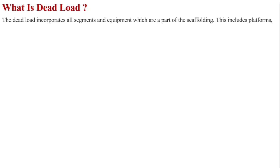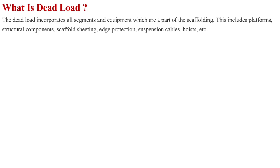The dead load incorporates all segments and equipment which are a part of scaffolding. These include platform, structure components, scaffolding, seating, edge protection, suspensions, scaffold, and hoist. We call it dead load — the components of scaffolding, the simple angle of scaffolding, and the materials we use. This is called the dead load.